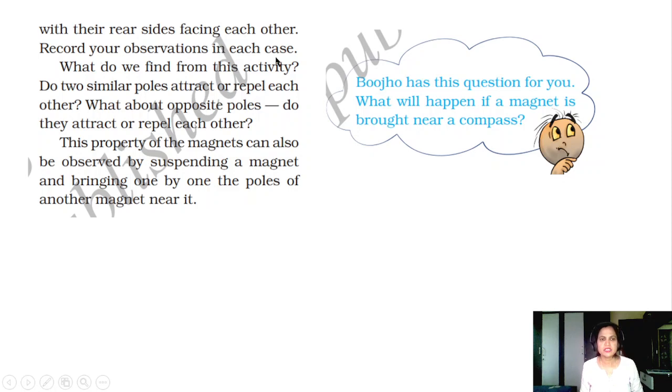Record your observations in each case. What do you find from this activity? Do two similar poles attract? No, they repel each other. What about opposite poles? Opposite poles always attract each other. This property of magnets can also be observed by suspending a magnet and bringing one by one the poles of another magnet near it.